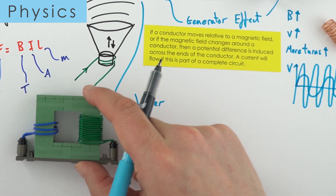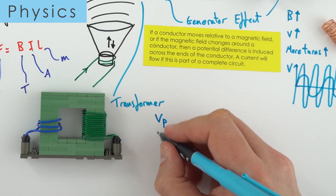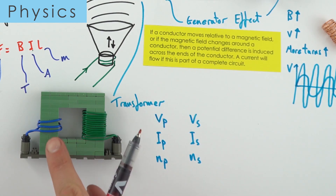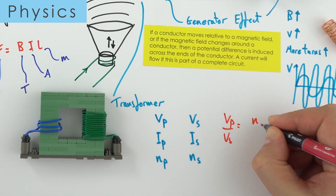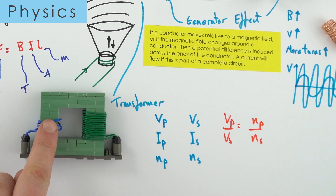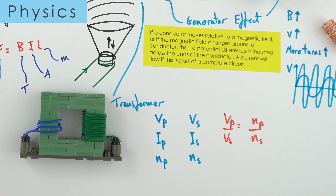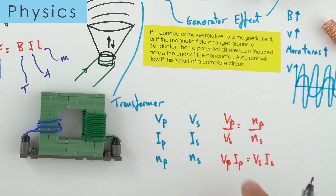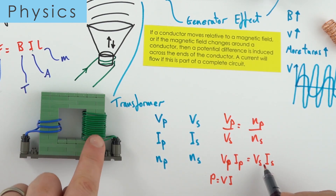The potential difference increases in proportion to the number of turns from primary to secondary. The equation is VP over VS equals NP over NS. So if the primary has 5 turns and the secondary has 10 turns, you might go from 5 volts to 10 volts. When you increase the potential difference, you reduce the current. The other equation is VP times IP equals VS times IS — this is effectively power, remembering that power equals potential difference times current. The power in the primary coil equals the power in the secondary coil.